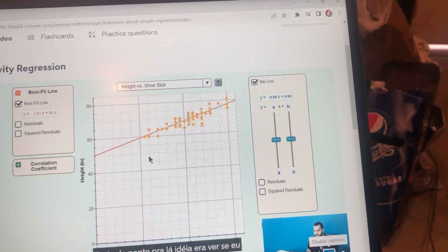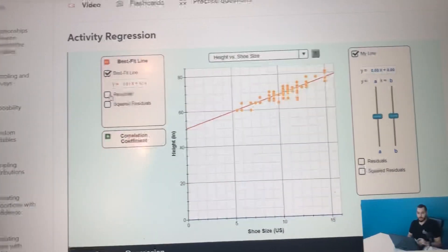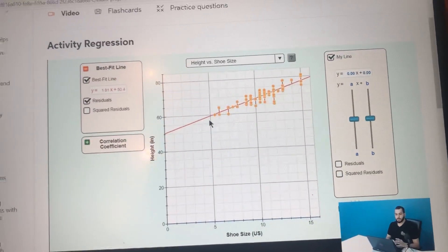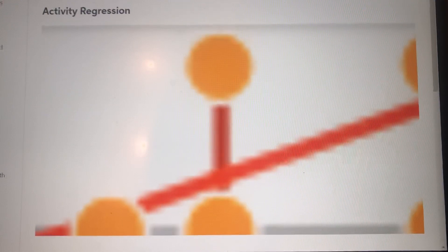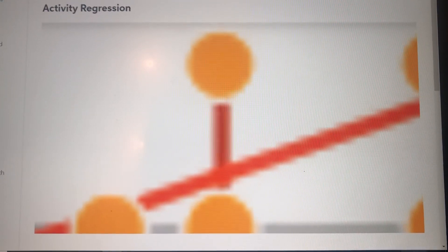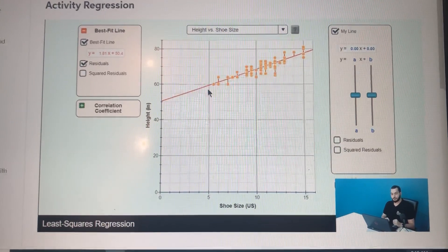The further the real data points are from the line, the higher the error. This error is called the residual. You can click here to see the residual, and you can see it from the graph as a line between the dots or points and the best fit line. So the more error there is, the longer the residual line.